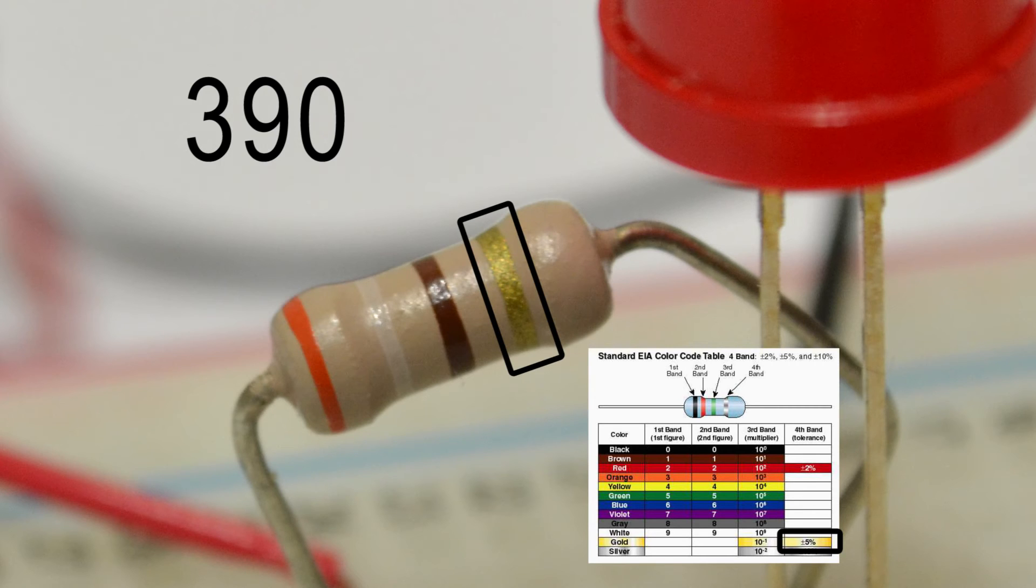And if you're curious, that fourth band is tolerance. That's basically how accurately the resistor has been made to its actual value. In the case of a gold band, that's 5%. That's pretty darn good.